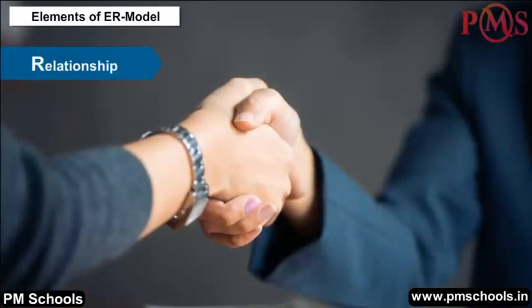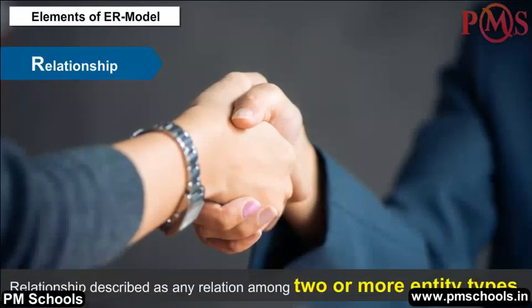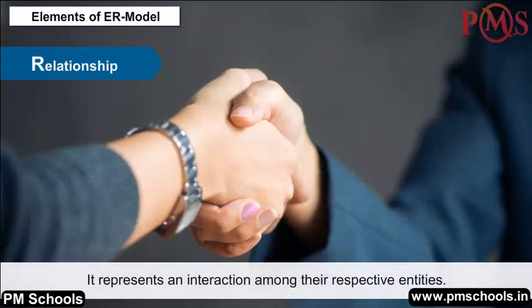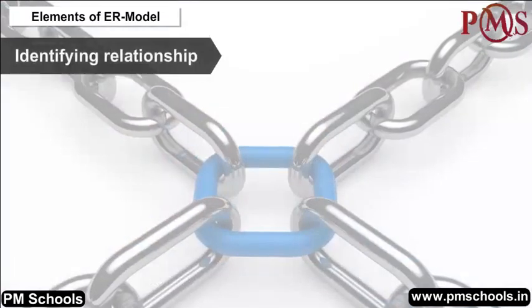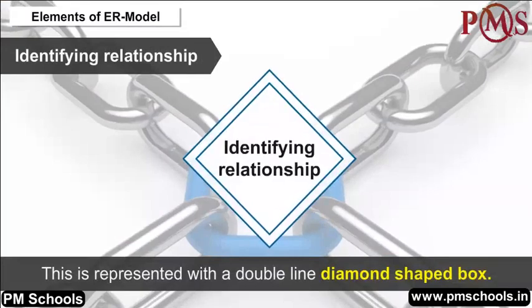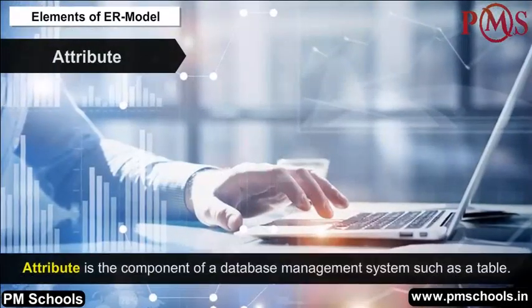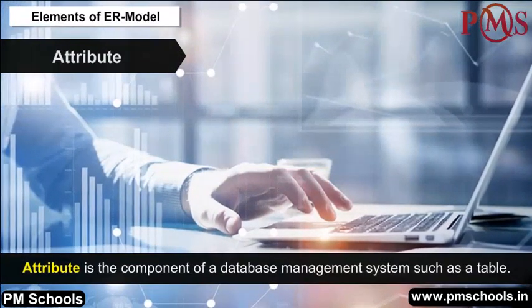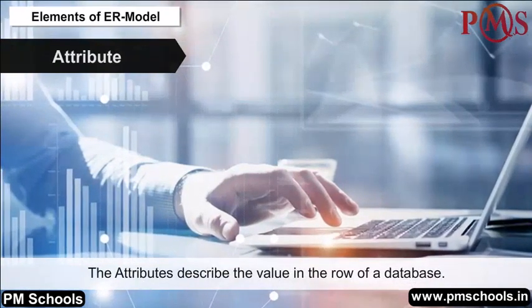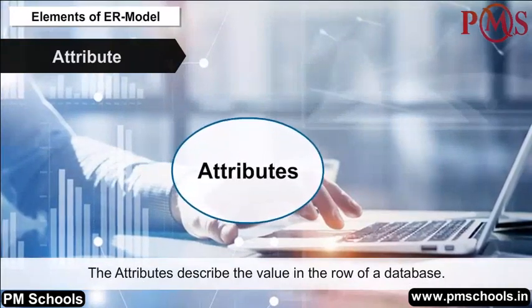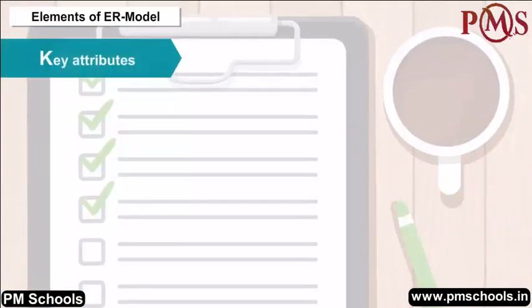Relationship: A relationship describes any association among two or more entity types and represents an interaction among their respective entities. It is represented as a diamond box. Identifying Relationship is represented with a double-lined diamond-shaped box. Attribute: An attribute is a component of a database management system such as a table. Attributes describe the values in the rows of a database, and attribute names are enclosed in ovals attached to their entity type by straight lines.